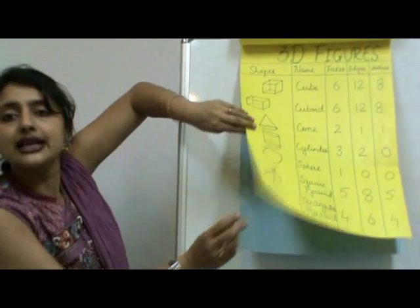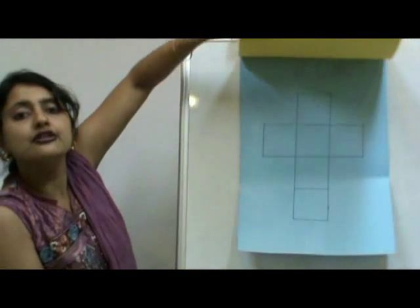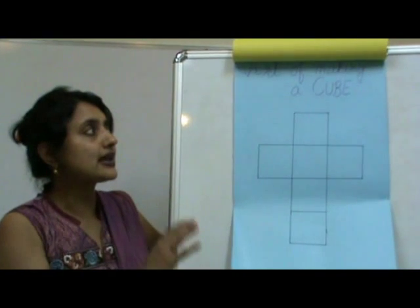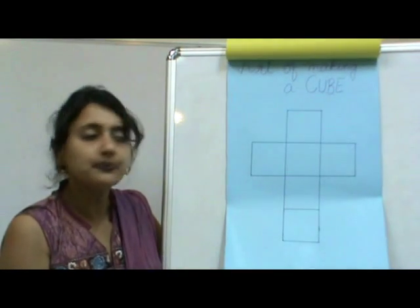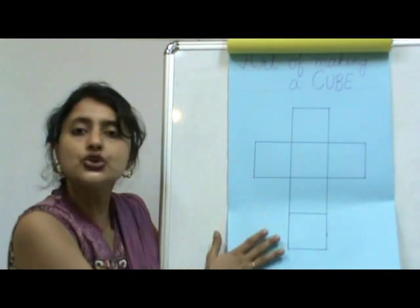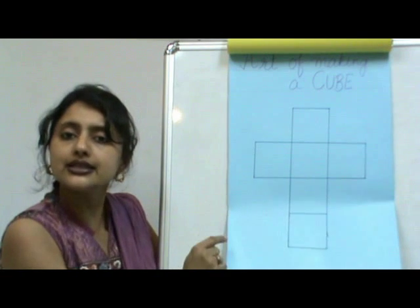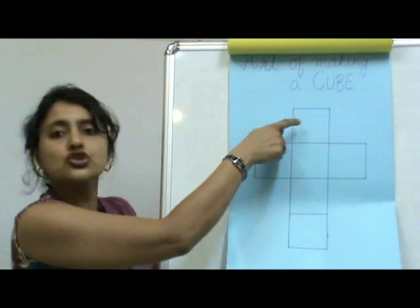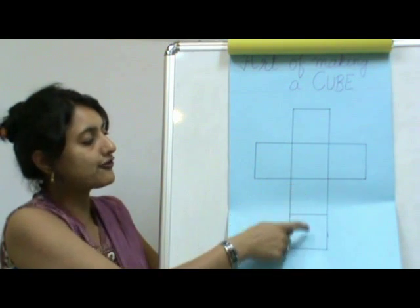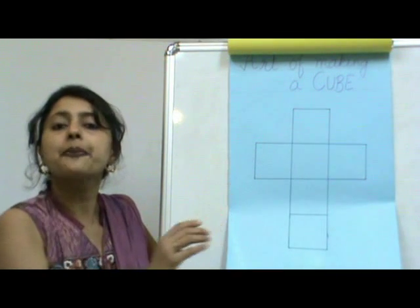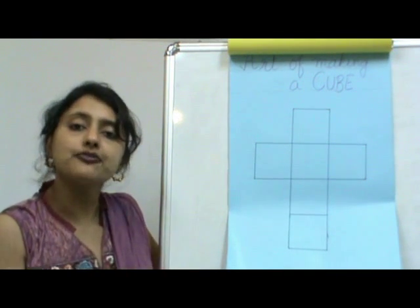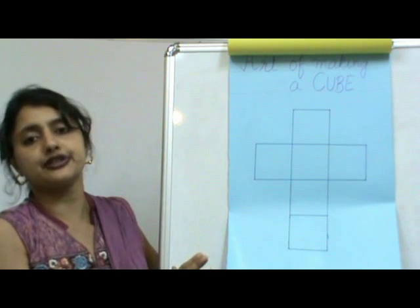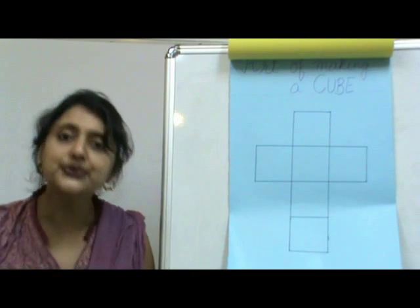And here is the assignment for you. This is the art of making a cube. I have provided you with six faces of a cube — counting from the top: one, two, three, four, five, and six. This is the art of paper folding, and you have to make a cube out of it. Thank you.